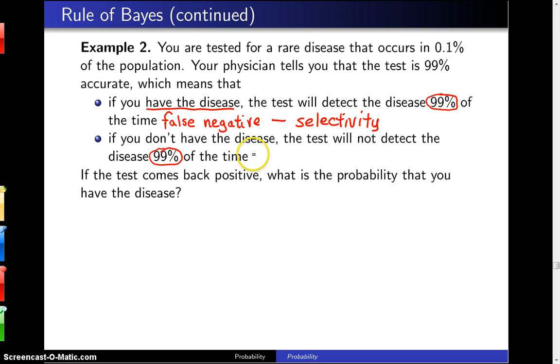This is also a second case, which is when you are healthy, that is you don't have the disease. If you make a mistake here, this is called a false positive. And in medicine they have a name for this as well. This is known as the specificity.